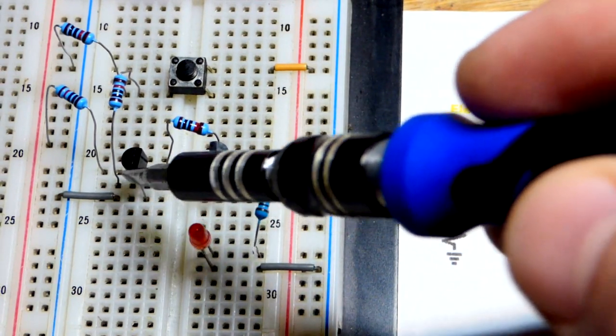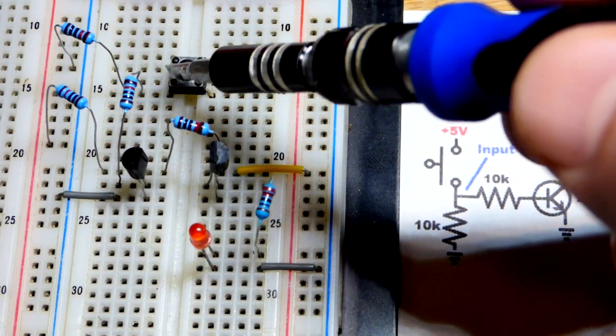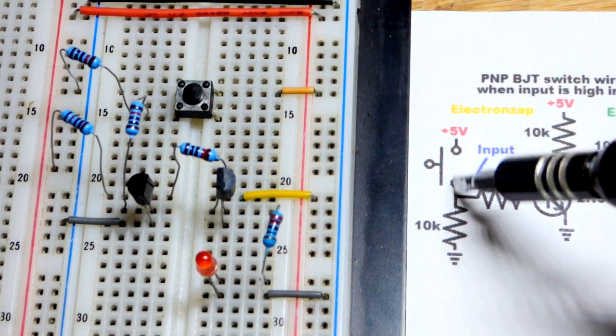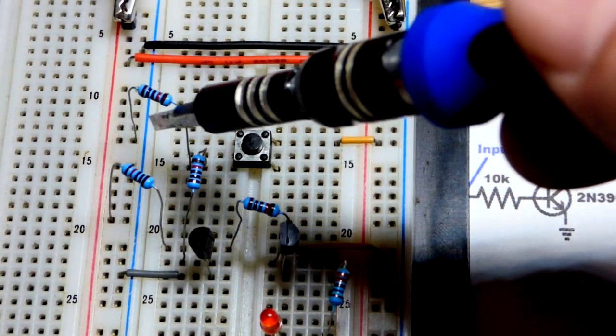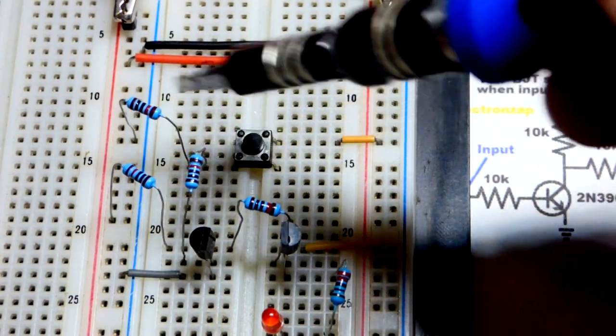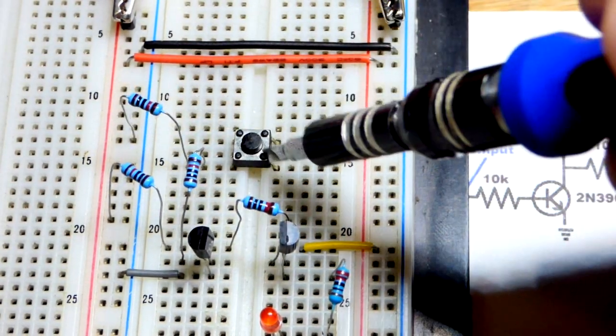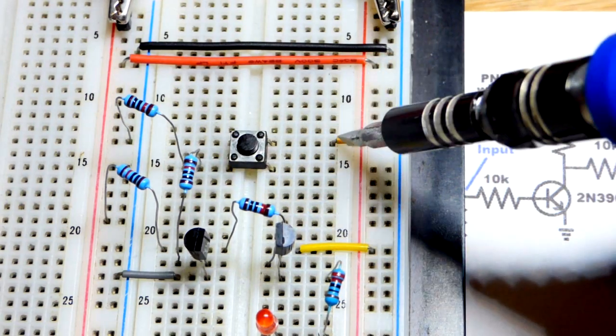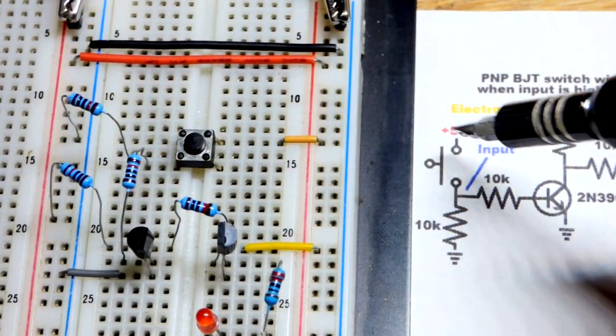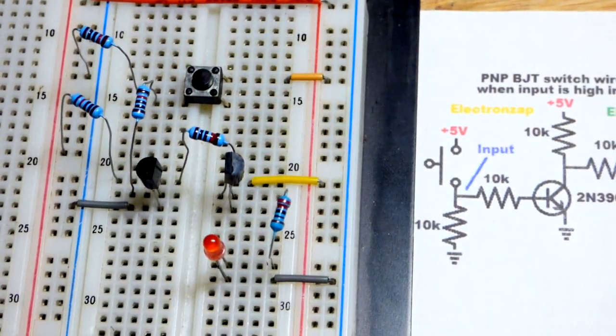And so there's the base, middle pin going up to the transistor switch, as well as a pull-down resistor. So even though it's working its way up, it's actually a pull-down resistor because it's going to ground. The switch, when I close it, doesn't matter what side it's on, I have the jumper on that side, will connect directly to the positive supply.